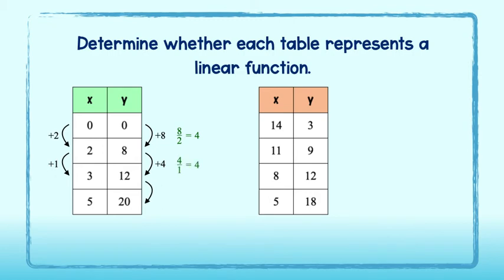Lastly, from 12 to 20, I'll add 8. And from 3 to 5, I'll add 2, for a rate of change of 8 halves, or 4. Since the rate of change is constant, this does represent a linear function.